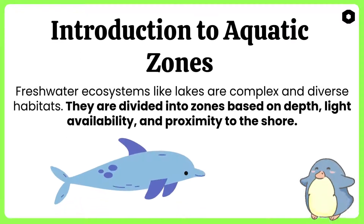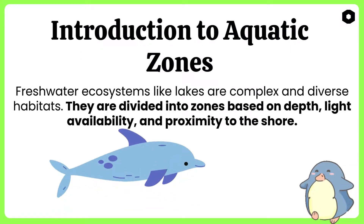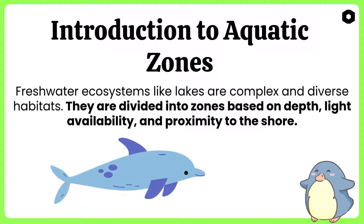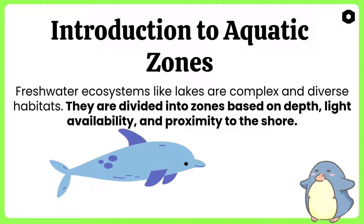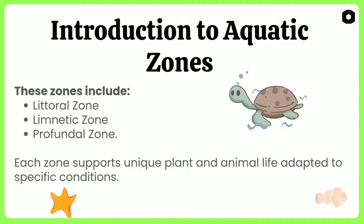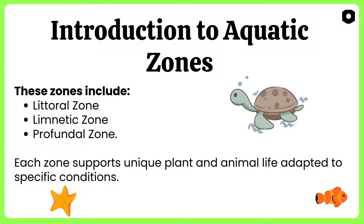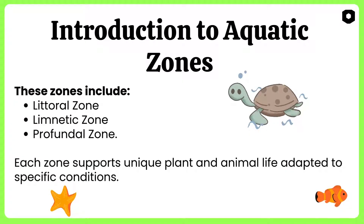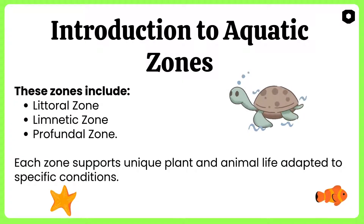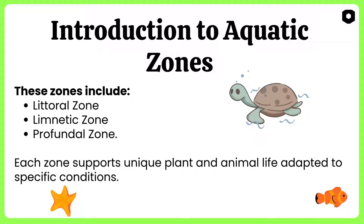Freshwater ecosystems like lakes are complex and diverse habitats. They are divided into zones based on depth, light availability, and proximity to the shore. These zones include the littoral zone, limetic zone, and profundal zone. Each zone supports unique plant and animal life adapted to specific conditions. We will discuss them one by one.